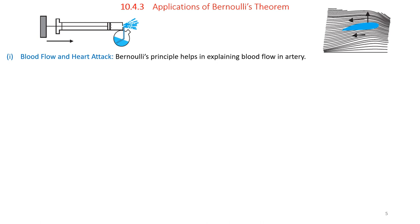Bernoulli's principle helps explain blood flow in arteries. An artery may get constricted due to accumulation of plaque on its inner walls. To drive blood through this constriction, a greater demand is placed on the heart. The speed of blood flow in the constricted region rises, which lowers the internal pressure, and the artery may collapse due to external pressure. The heart then exerts further pressure to force blood through, and the repeat collapse may result in a heart attack.